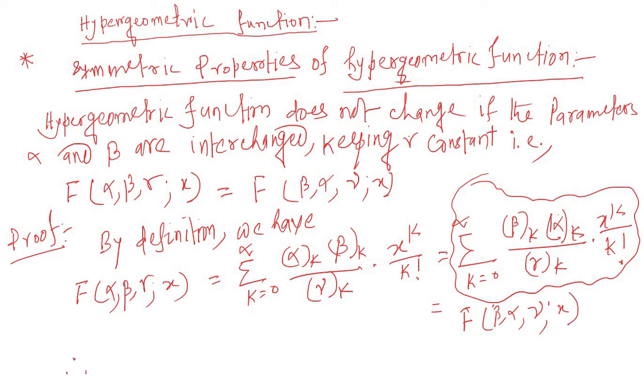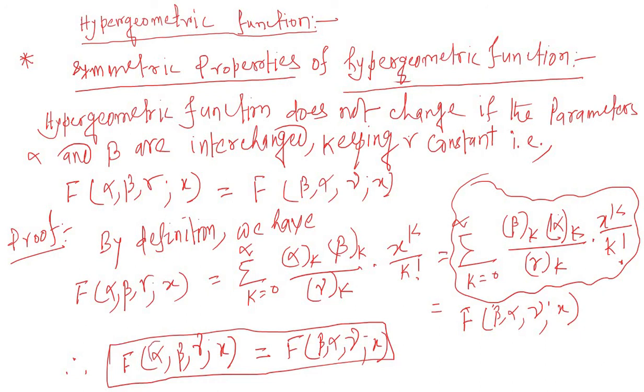Therefore, F(α, β, γ, x) is equal to F(β, α, γ, x). This equation shows that hypergeometric function is symmetric with respect to alpha and beta, keeping gamma constant.